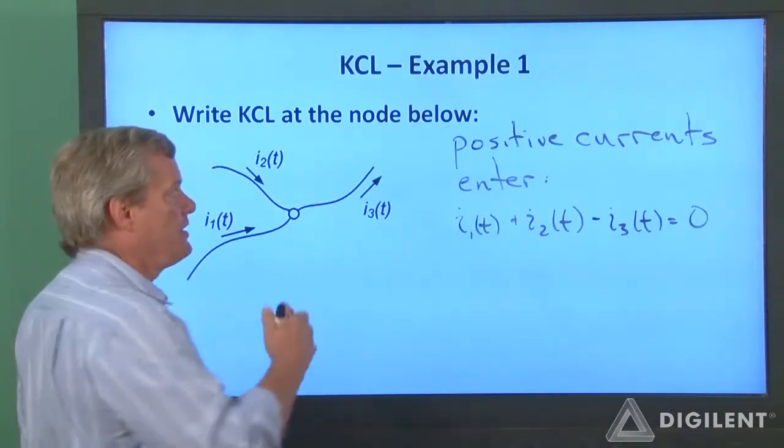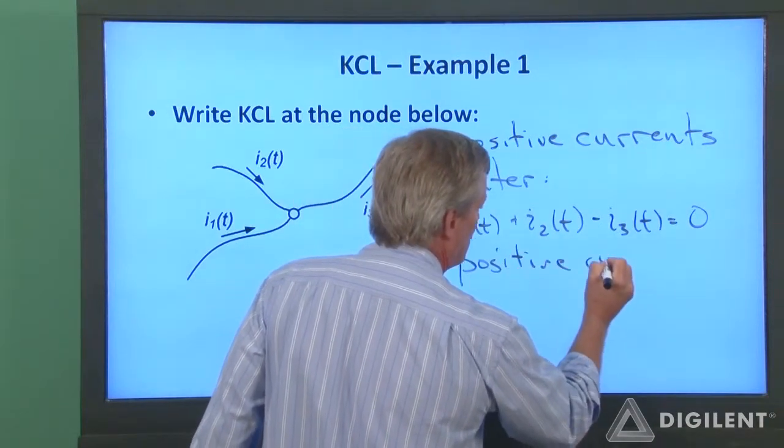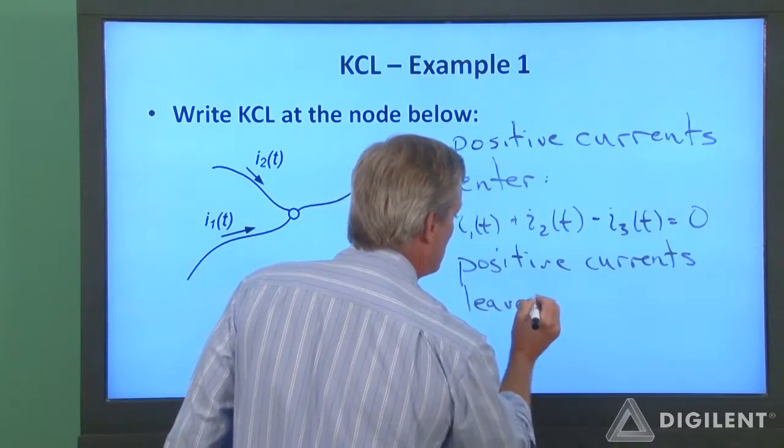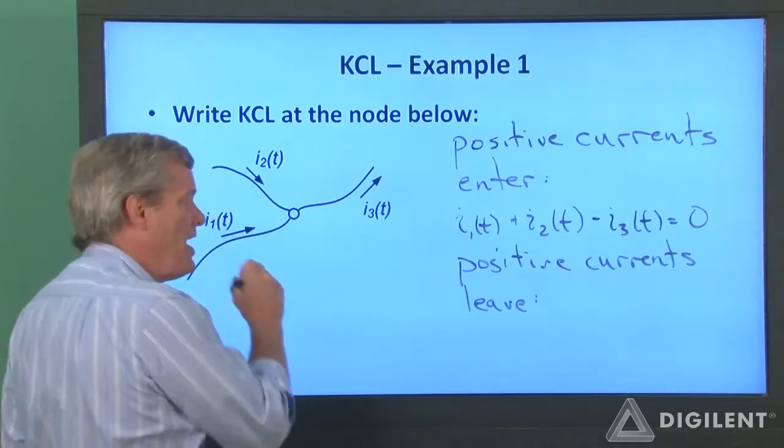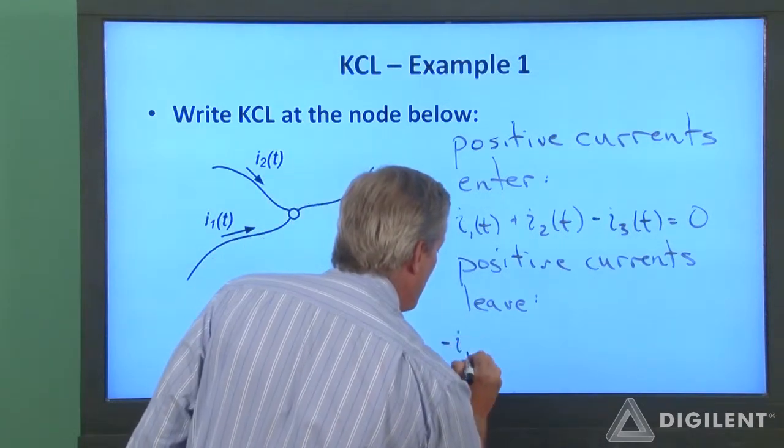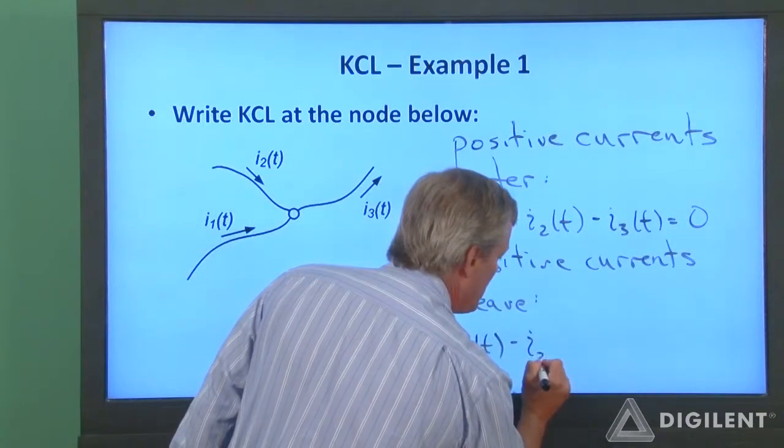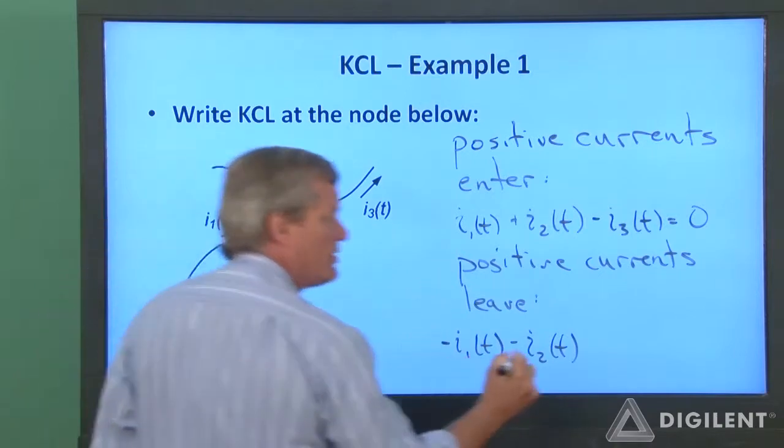Now, we could just as easily assume that positive currents are leaving. If I assume positive currents are leaving, a current entering is going to be negative, so I'll have negative I1 of t plus a negative I2 of t and I3 of t is leaving, so it is positive.